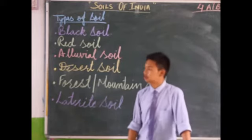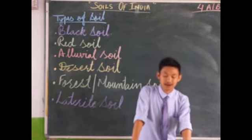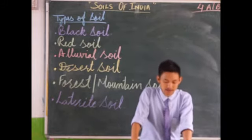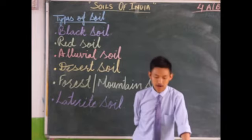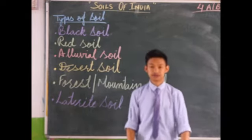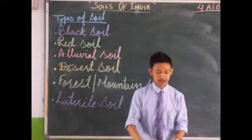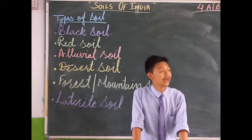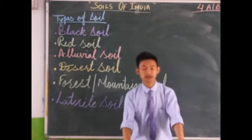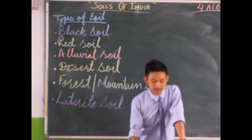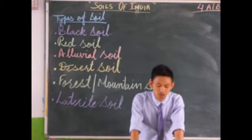Forest or mountain soil is mostly found in the mountain regions of India. It is dark brown or black in color and is very fertile because of the presence of humus. This type of soil is found in the lower altitudes of the Himalayas and in the states of Assam, Arunachal Pradesh, Jammu and Kashmir, Himachal Pradesh, Uttarakhand, and Sikkim. A large variety of tropical foods, tea, coffee, spices, wheat, maize, and barley can be grown in this soil.